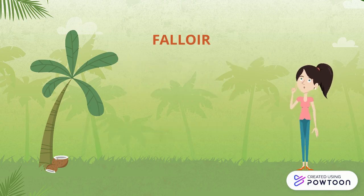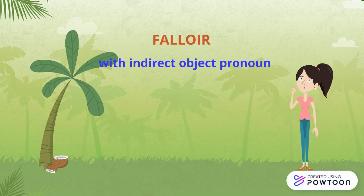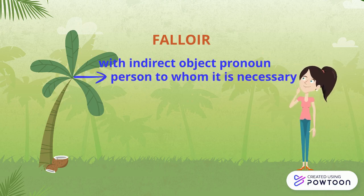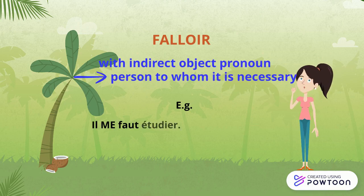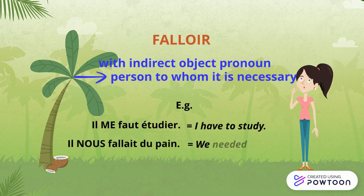Falloir can be used with an indirect object pronoun, which refers to the person to whom it is necessary. For instance, il me faut étudier (I have to study), il nous fallait du pain (we needed bread).